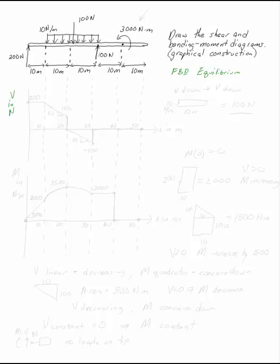Our V diagram will be in units of newtons and we can break it up into the same sort of 10 meter chunks that the beam is broken up into. And we'll consider each of these separately. So 10, 20, 30, 40, 50. X is measured in meters and we can draw the shear and bending moment diagram.